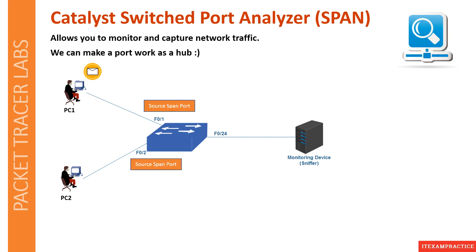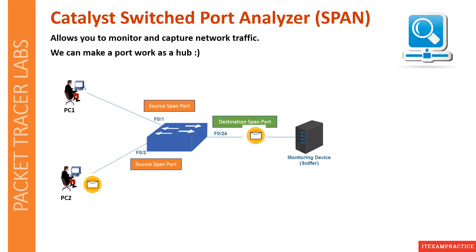PC1 is connected to F01, which is our source port, and PC2 is connected to F02, a source port as well. F024 is our destination SPAN port. When PC1 sends a message to PC2, a copy of this message arrives at our monitoring device. That's it.